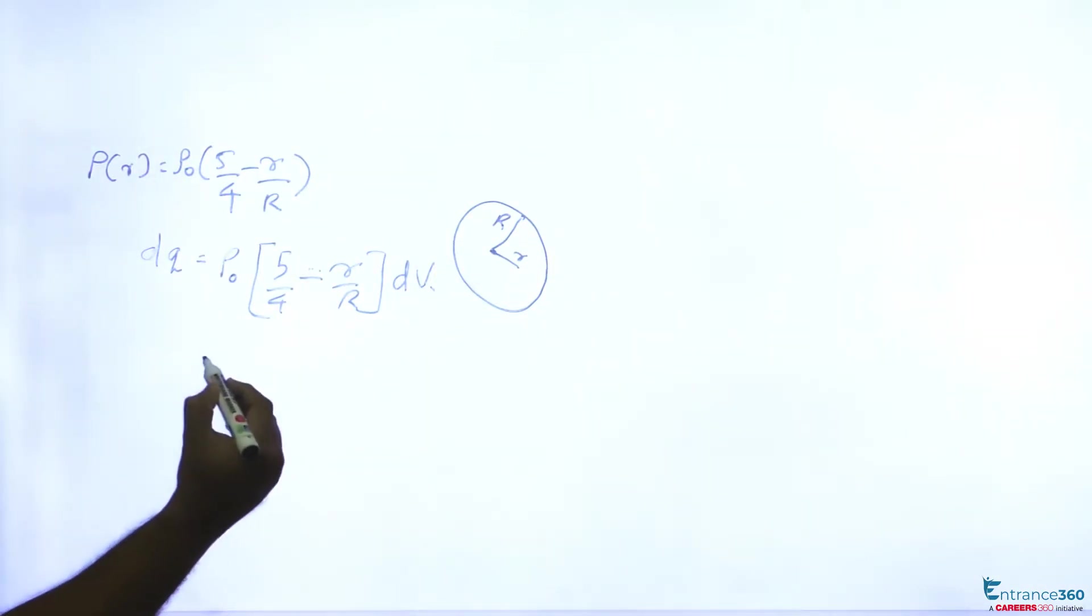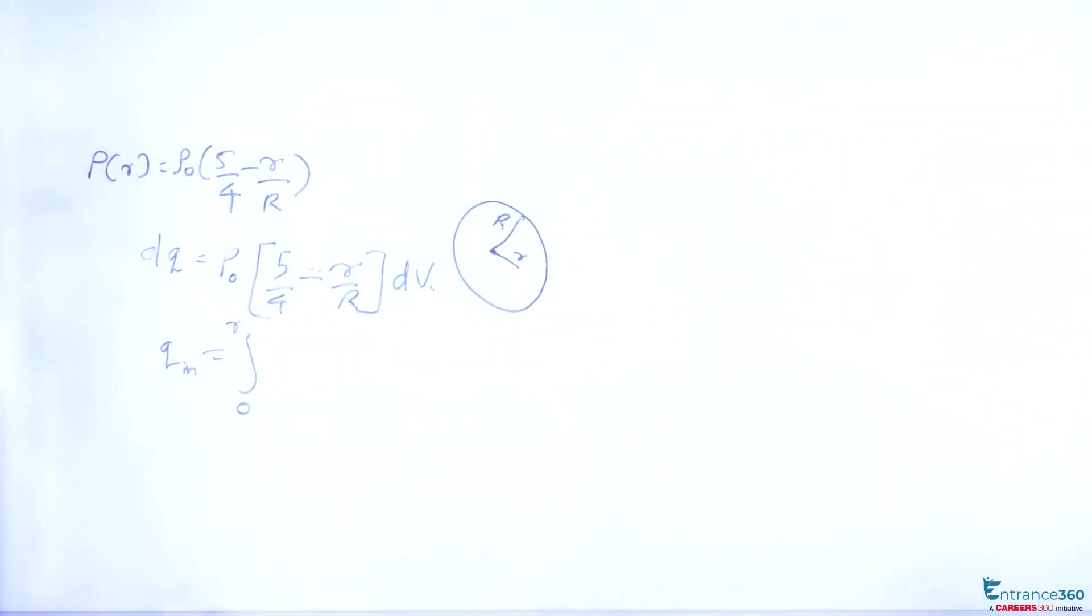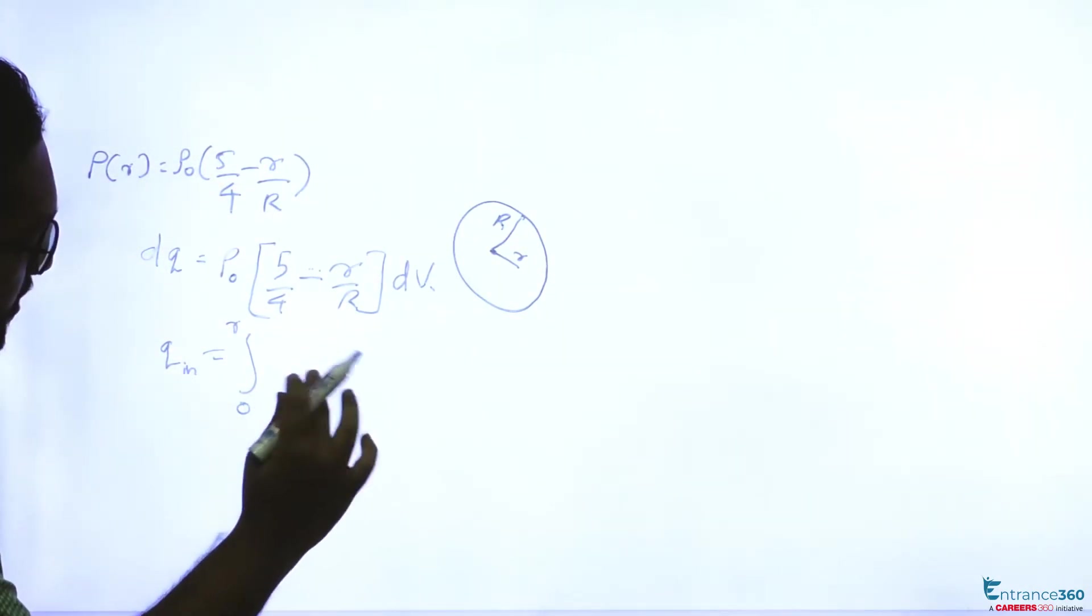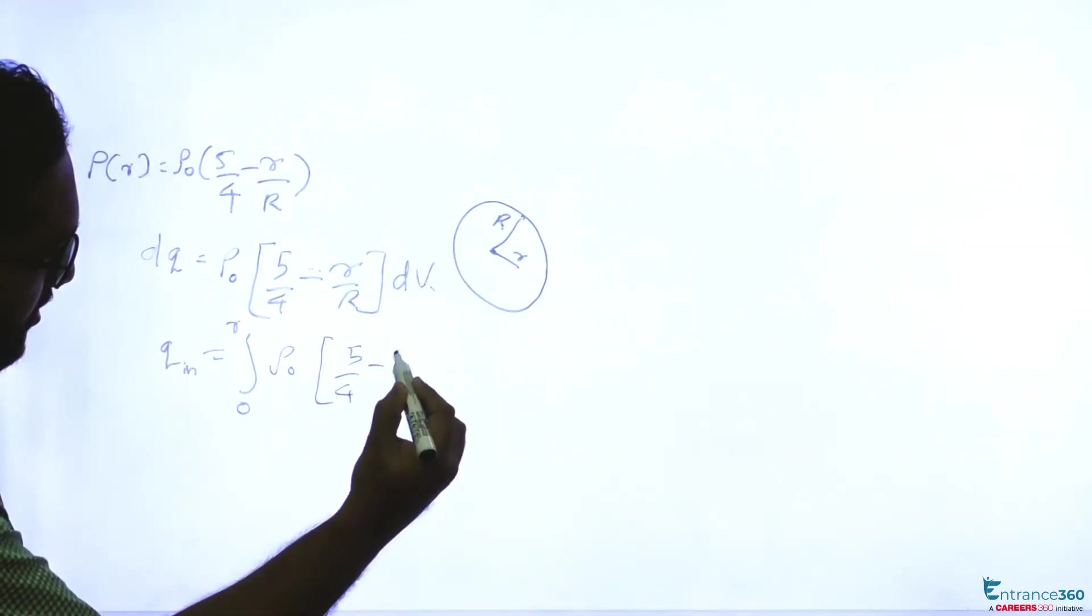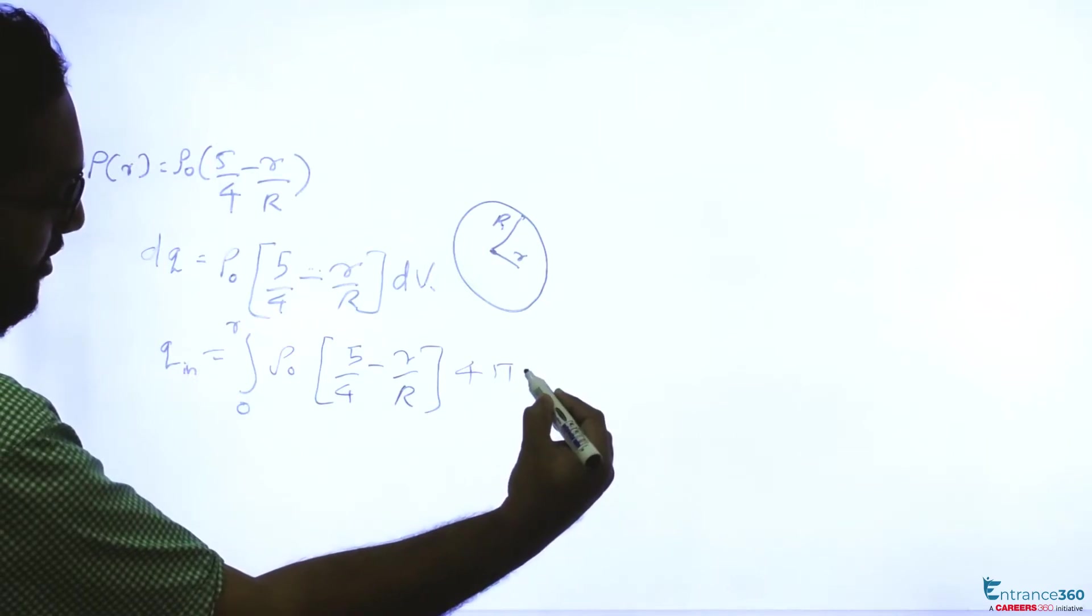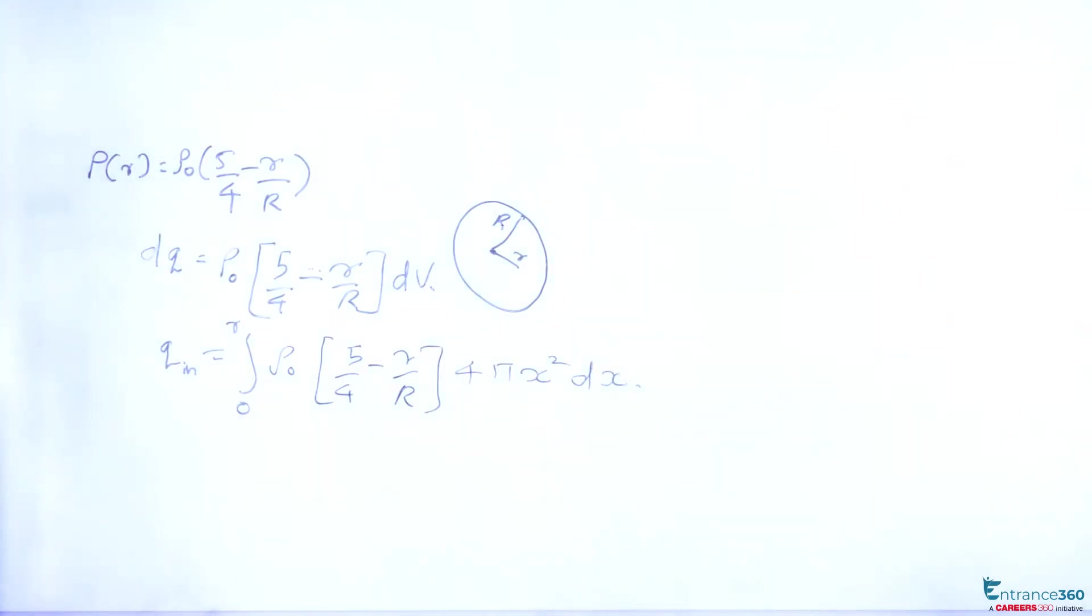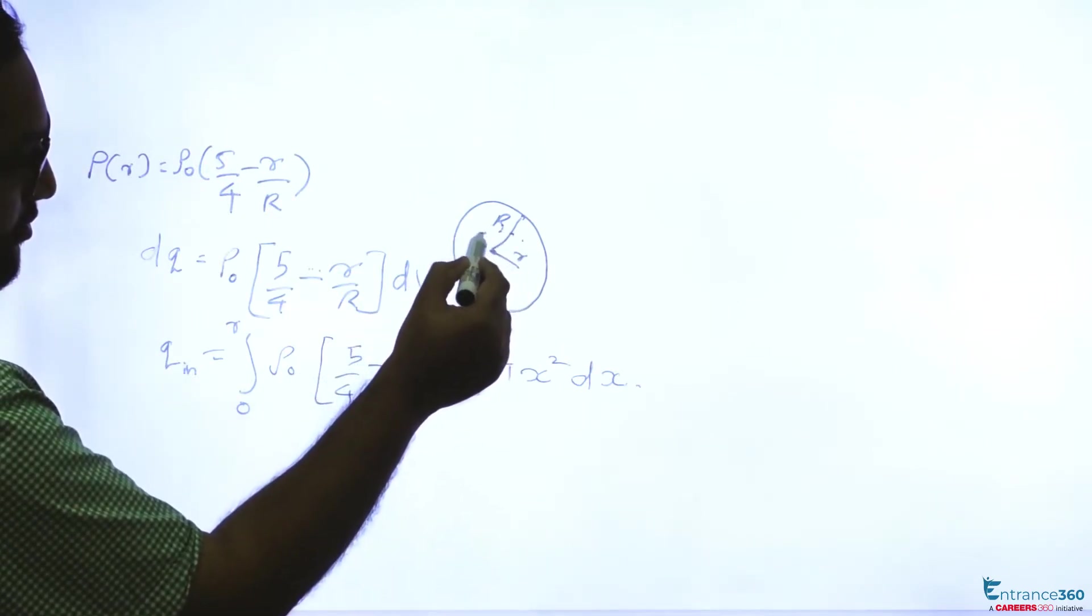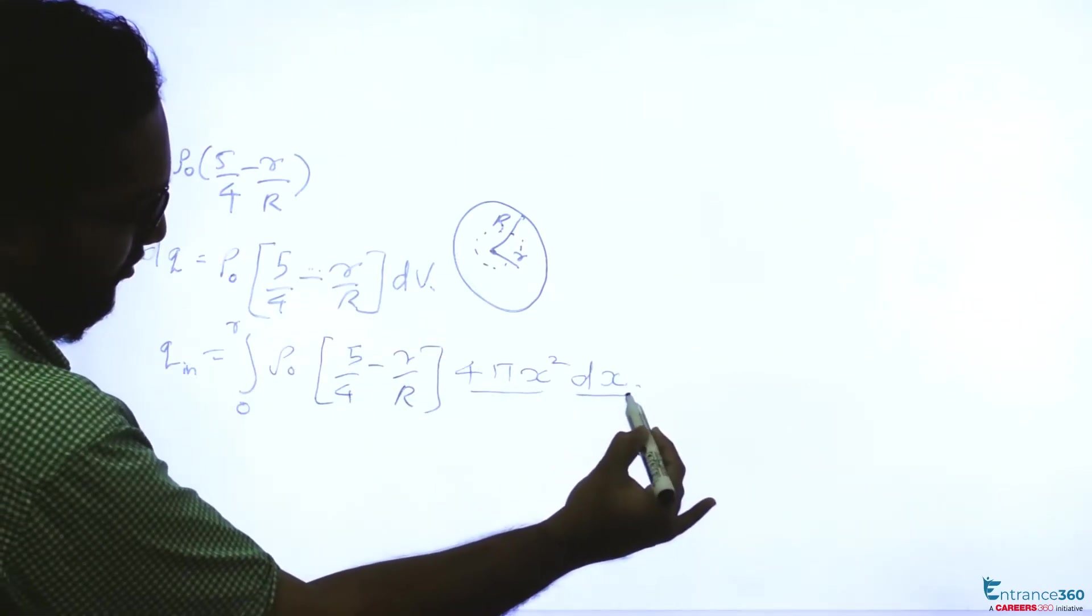We have to find the total charge q inside, you have to integrate. You have to find at a distance r, for a small part, say ρ₀(5/4 - r/R) and dV will be 4πx²dx. If we are considering a small part, then volume dV is written as area into dx.